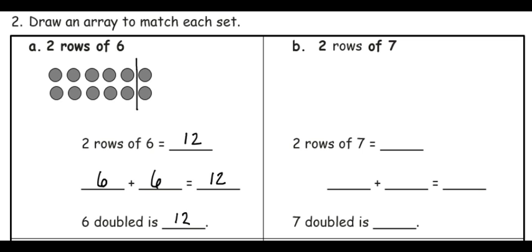In question B, I'm going to draw two rows of 7. When I draw my rows, I'll start with 7, and then I'll do another row of 7.